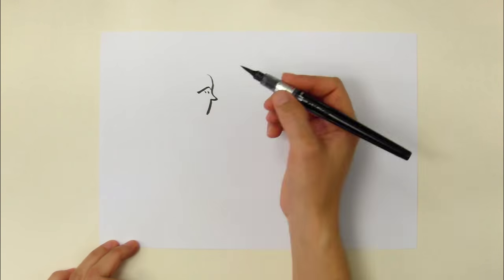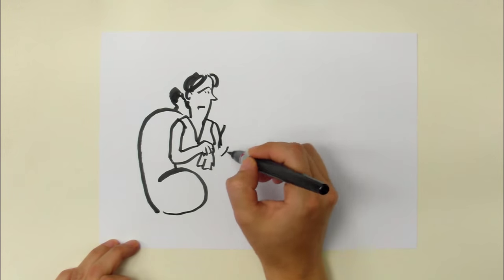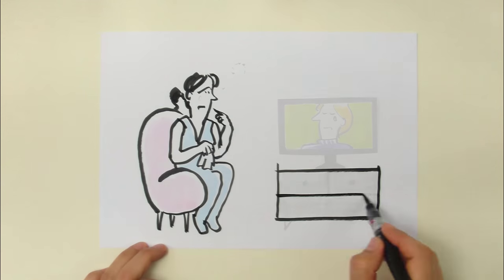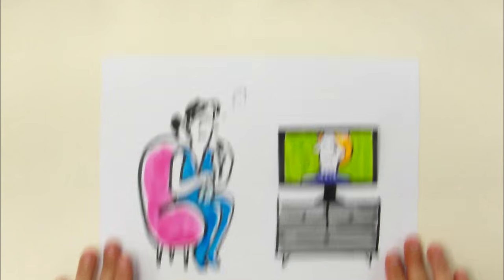In fact, we're wired for empathy. Our mirror neurons respond sensitively to what others do, think and feel. We're more connected to each other than we think.